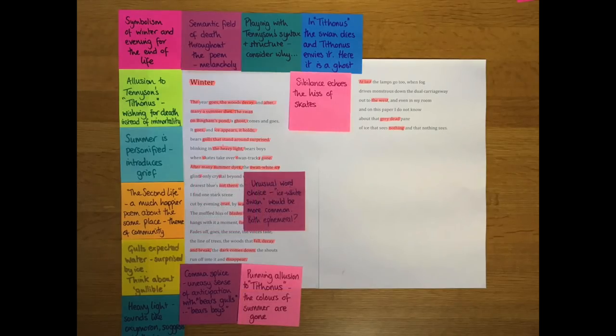The swan white ice. The word choice here is slightly unusual. Maybe we would expect an ice white swan rather than swan white ice. But I think linking the two ideas reminds us that they're both things that come and go. Morgan's been talking about the swan being like a ghost that comes and goes. The ice isn't there to stay. Both are quite ephemeral, quite short-lived things.